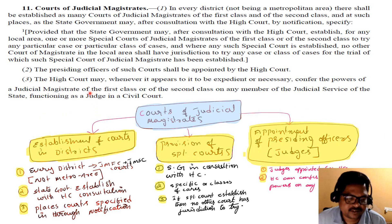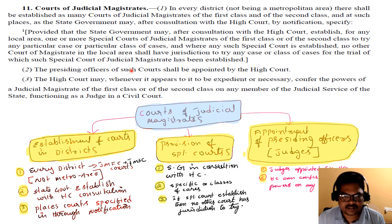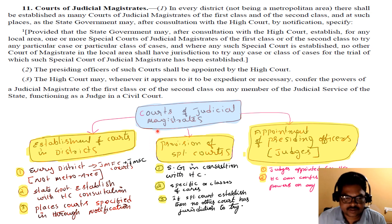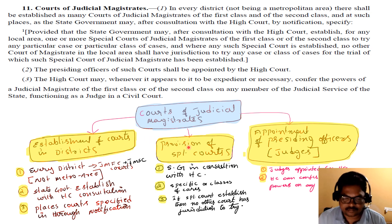We have seen Section 10 on Court of Sessions. Now in Section 11, the era continues with Court of Judicial Magistrates. It has three things mentioned in subsections 1, 2, and 3. Don't read the bare text for now. Come straight to the diagram and focus here. Court of Judicial Magistrates covers three things: establishment of courts in districts, provision of special courts, and appointment of presiding officers. That's why these charts are called brain trees or brain charts.